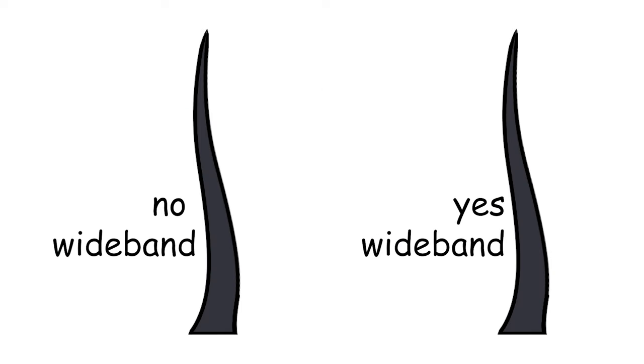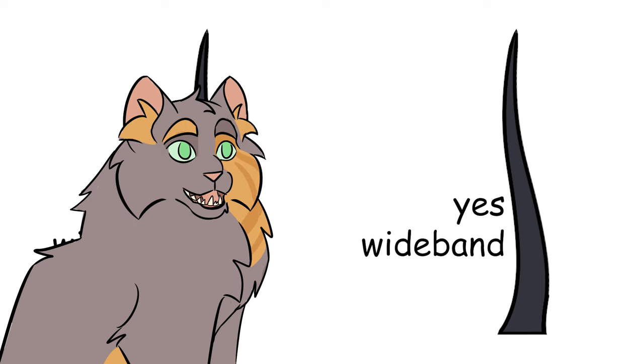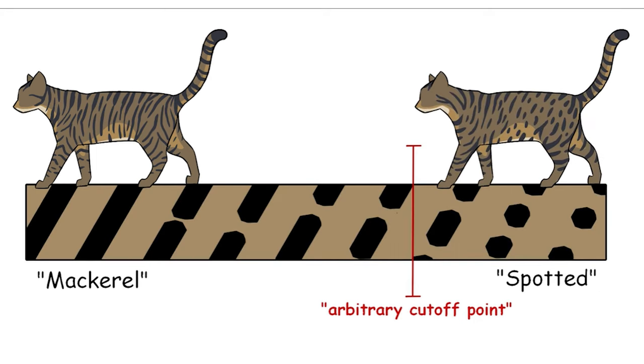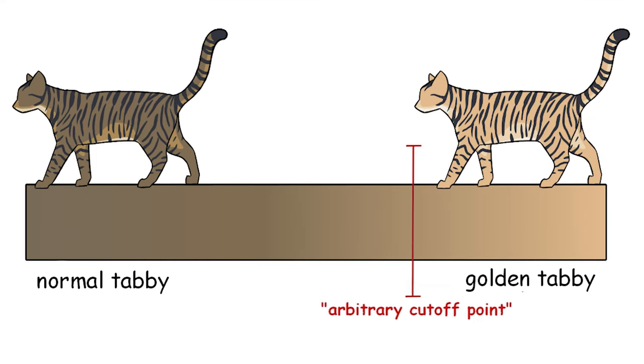Unlike inhibitor, widebanding seems to only affect tabbies. A homozygous little a little a cat can only carry widebanding but can never express it. Is it a gradient trait? Probably. But unlike rufusing, which we describe in relative terms, you know, more or less rufusing, higher, lower, so on, cats either are or aren't considered golden. Similar to spotted tabbies, actually. And from what I can find, the deciding point is a little arbitrary.